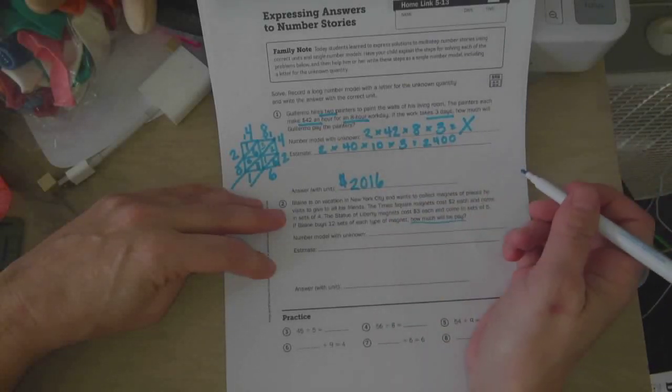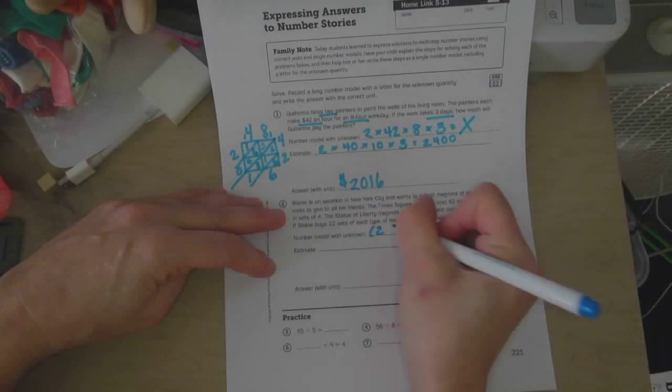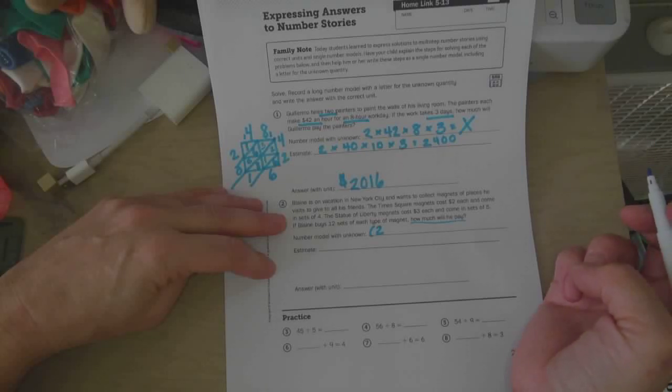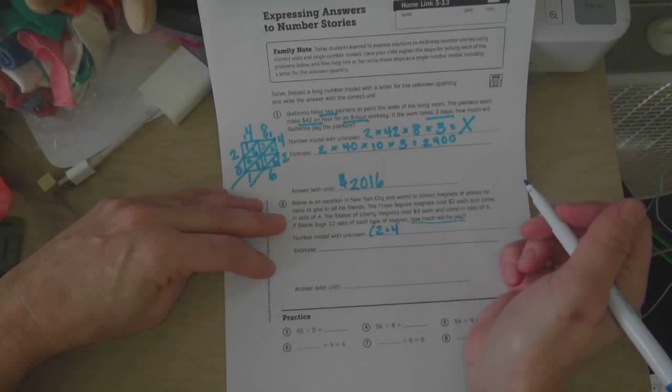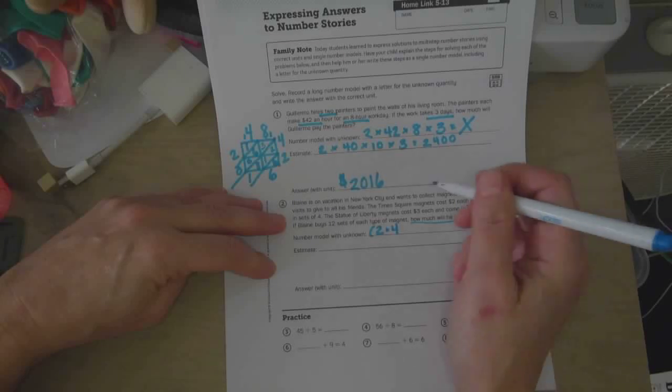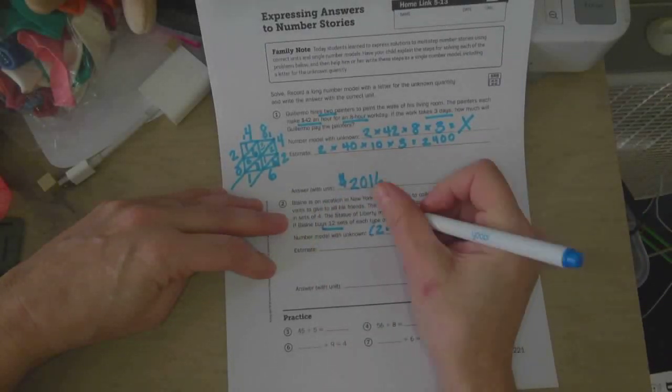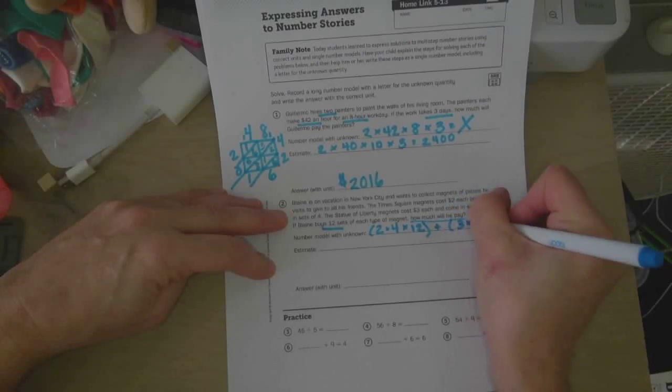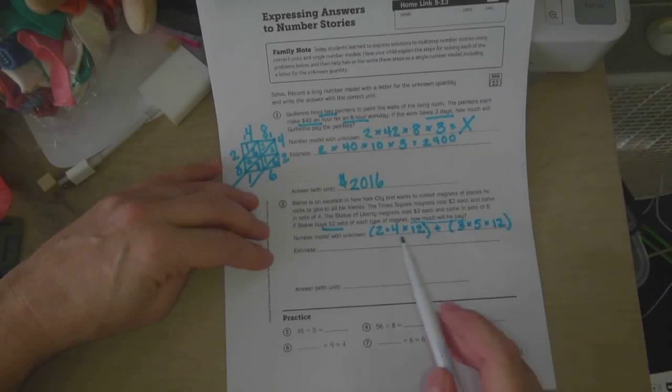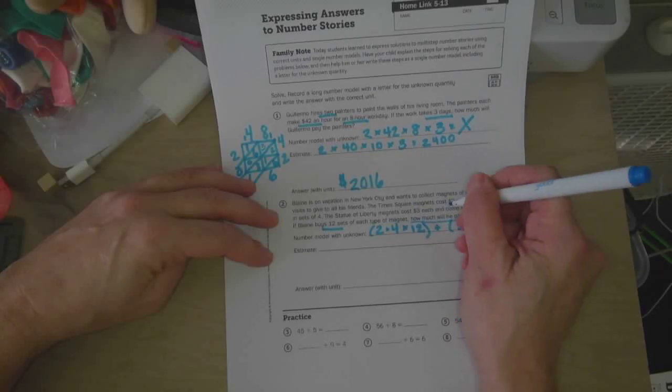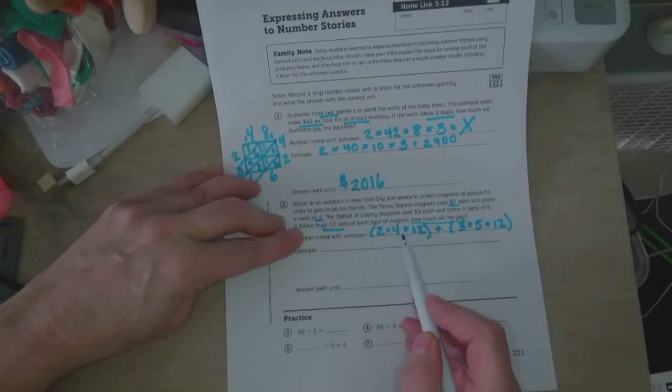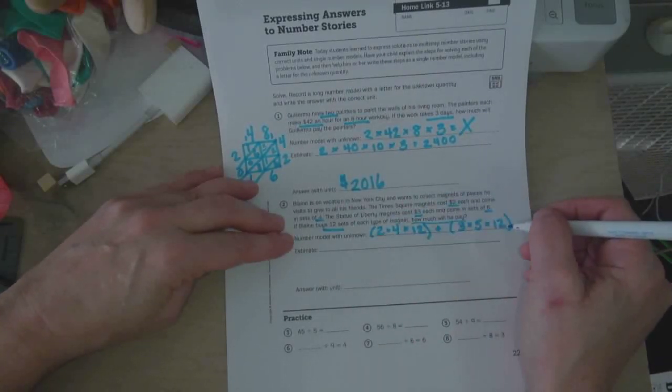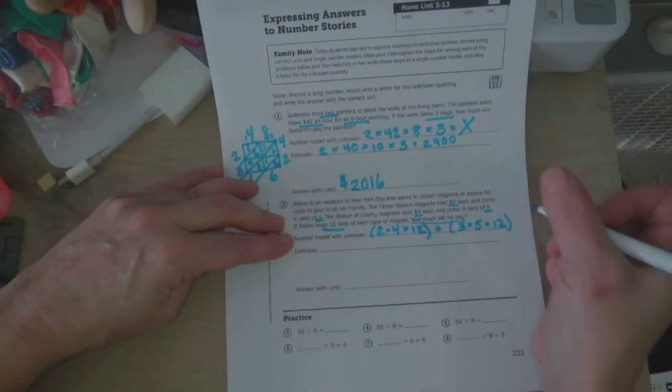So, the Times Square magnets. The Times Square magnets cost $2 each and come in sets of 4. And he's buying 12 sets of each though. So it's going to be 2 times 4 times 12 plus 3 times 5 times 12. I'm just going to explain that because it's kind of confusing because the numbers are kind of all over the place. So the Times Square magnets, they're $2 each and they come in sets of 4, and he's buying 12 of them. So 2 times 4 times 12. The Statue of Liberty ones cost $3 each, come in sets of 5, and he's buying 12 of those also. So that's why it's 2 times 4 times 12 plus 3 times 5 times 12 equals x.